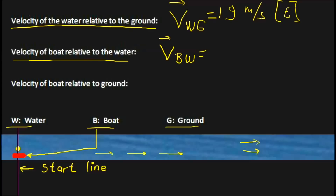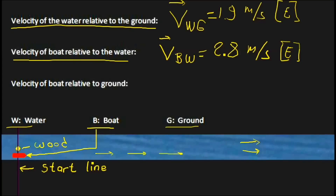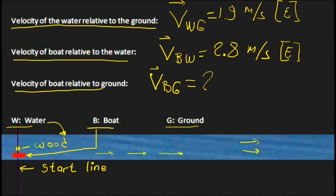There is a piece of wood here — the wood floats on the surface of the water, and the velocity of the wood equals the velocity of the water; they flow with the same speed. When the boat starts moving with constant velocity, at the same time I drop a piece of wood on the surface, so they start together.